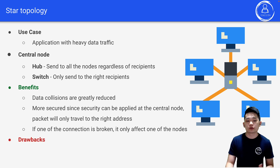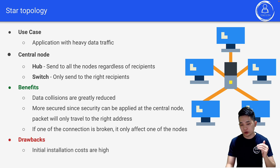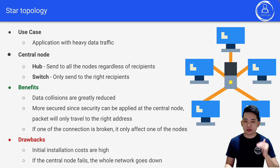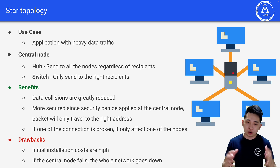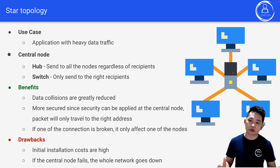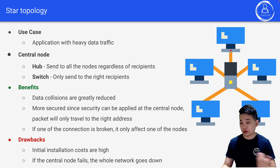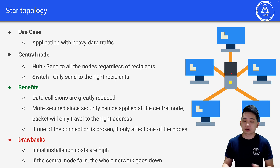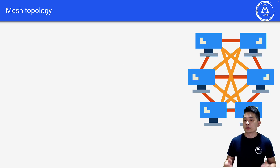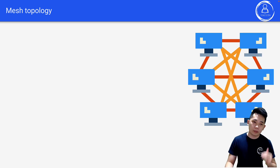Drawbacks of star topology are that initial installation costs are high. Also, if the central node fails, the whole network goes down, because all nodes communicate through it — if it goes down, all connections go down.